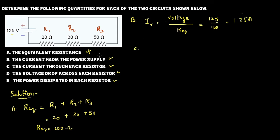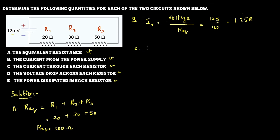The third one, current through each resistor. Each resistor is connected in series, so the current through them is common. So I is equal to I1 equal to I2 equal to I3, that is equal to 1.25 ampere.